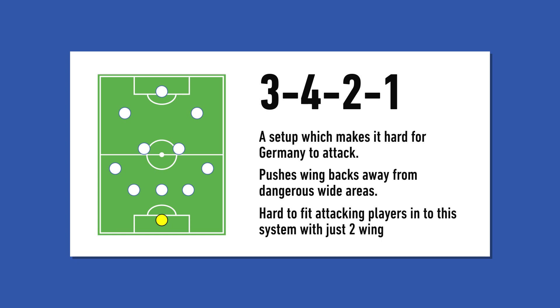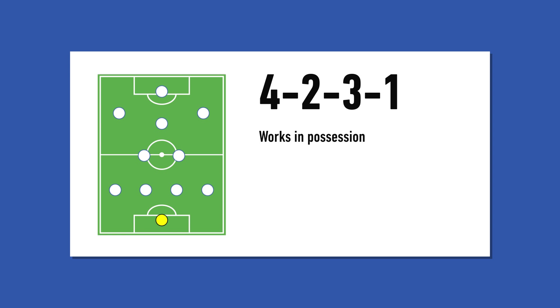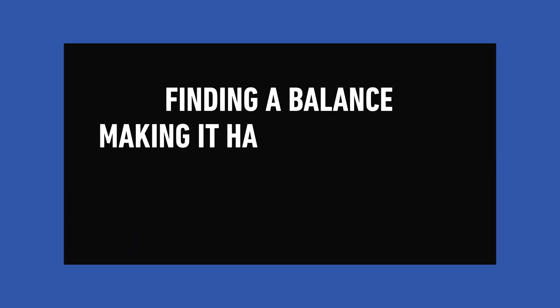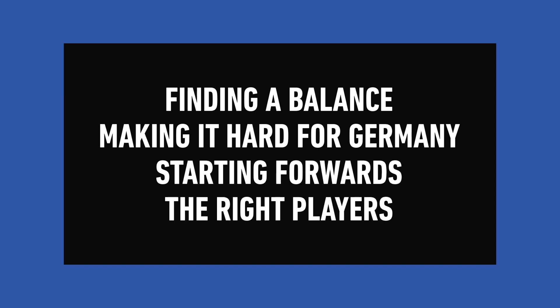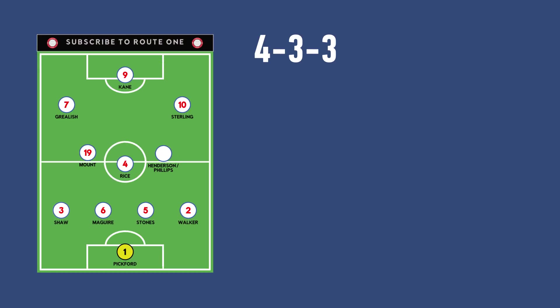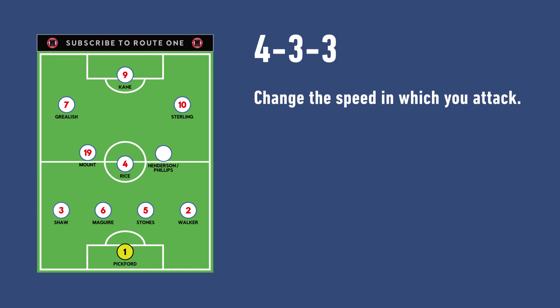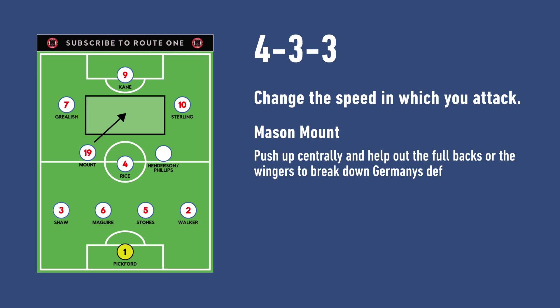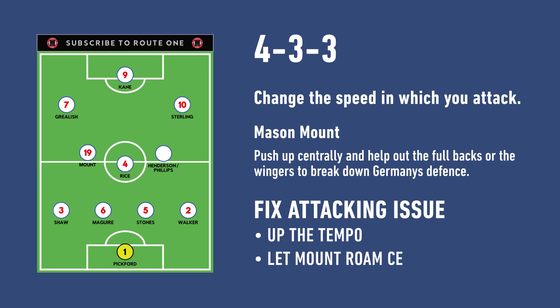However, this formation makes it difficult to choose between the attacking talent as you've only got two wingers in the forward line to pick. A 4-2-3-1 works in possession but maybe leaves you vulnerable to Germany's attack where they can get a lot of space in the areas where they can hurt England. Finding a balance is tricky. The 4-3-3 may be what gives you that — what can change it from the Scotland game is the speed in which you attack and allowing Mason Mount from midfield to push up centrally and help the fullbacks or wingers break down Germany's defence. Up the tempo on the counter and let Mount roam into central areas.